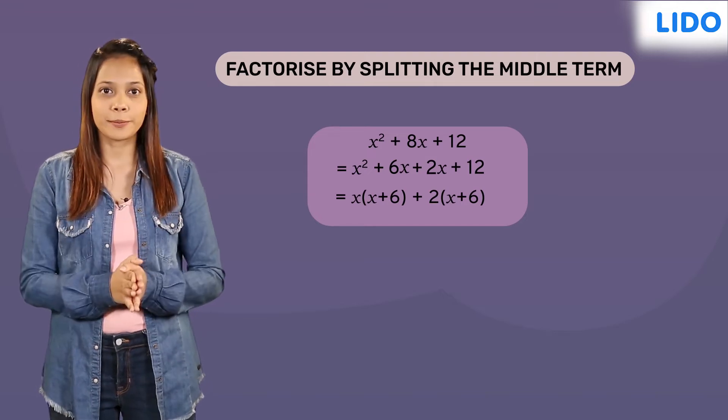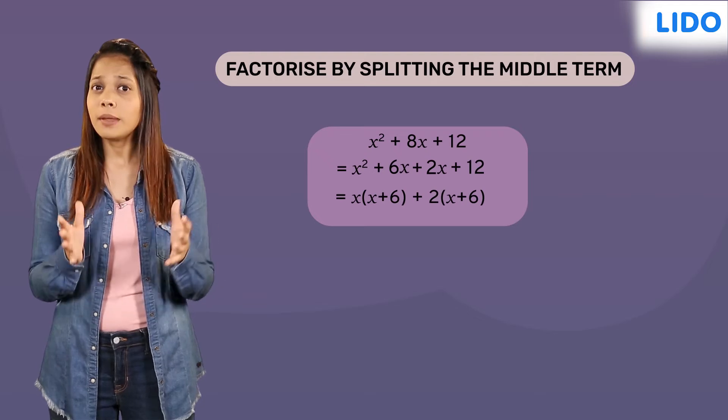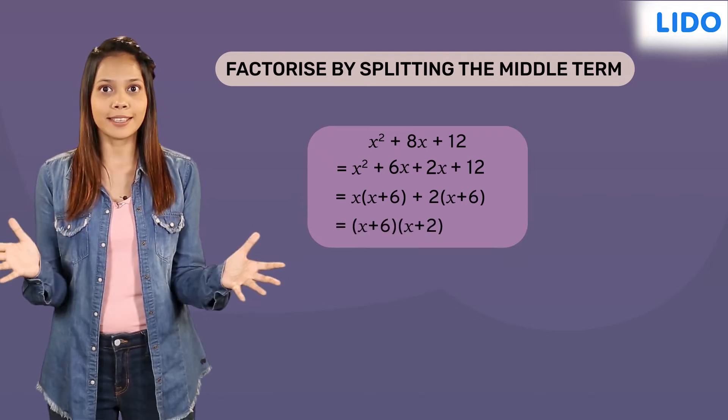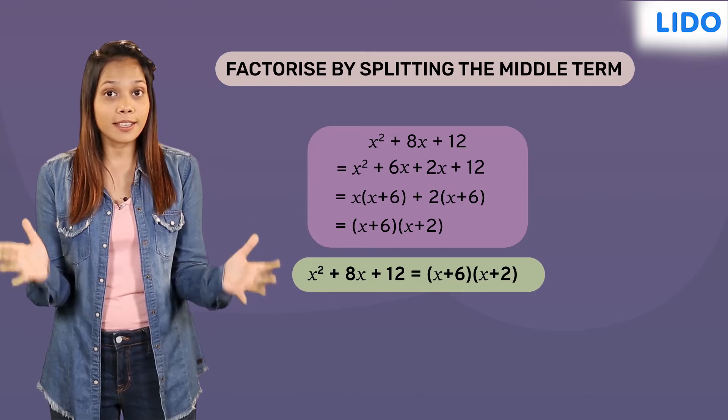So, recheck the steps. Now, take out the common binomial term from both the groups. And that's it. We have factorised the given expression.